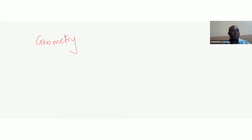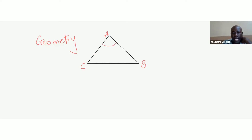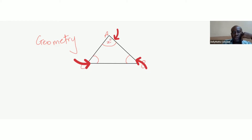The aspect of geometry we're looking at has to do with triangles and their total interior angles. Let's say we have a triangle — we'll call the vertices A, B, and C. The interior angles are one angle at A, one at B, and one at C. We'll label these as x degrees, y degrees, and z degrees.